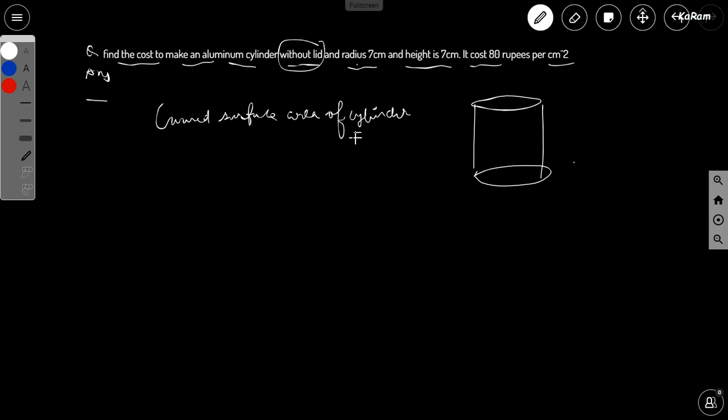is actually 2 pi r h. We just need to put the value here. So 2 and pi is 22 by 7, multiply radius. Radius is 7 here, so 7, and height is 7 as well.